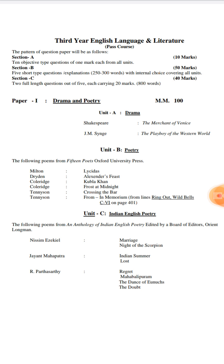Unit B is related to English poetry. In Unit B, there is the poem Lycidas by John Milton, Alexander's Feast by John Dryden, Kubla Khan by S.T. Coleridge, and Frost at Midnight, also by S.T. Coleridge.